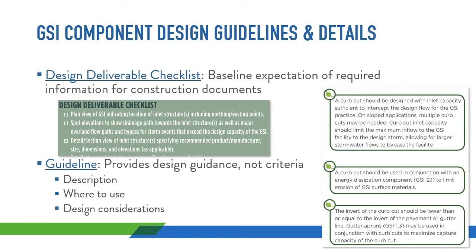The cover page for each component provides a short definition and photo example. A design deliverable checklist is provided to outline the minimum required information that should be included in construction documents for this component. This checklist should be used by designers before submittals and by project managers receiving construction documents as part of their review process. Each design component has an associated guideline that includes a standard description, where it is appropriate or not appropriate for use, and a list of other design considerations. These considerations were developed from lessons learned on previously constructed green stormwater infrastructure projects, as institutional knowledge grows and it's important to learn from past experiences to continually improve.